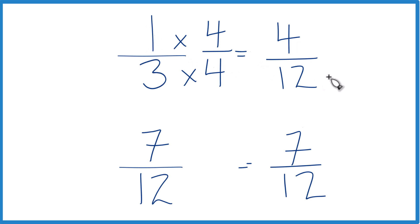They have the same value. Now that we have the same denominator, we'll just compare the numerators and we'll know whether one-third is greater than, less than, or equal to seven-twelfths.